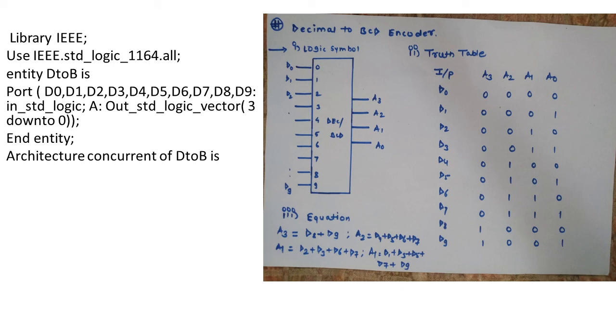In next case we will declare its architecture as concurrent because we are dealing with the equation that is going to be a part of our dataflow style of modeling. Architecture concurrent of entity name is d2b. Let us initialize the statement and we will write now the equations as a3 less than or equal to addition of d8 and d9 that is d8 or d9.